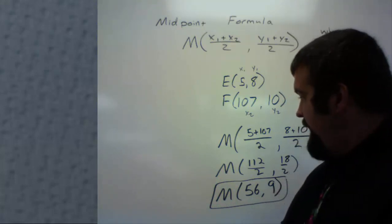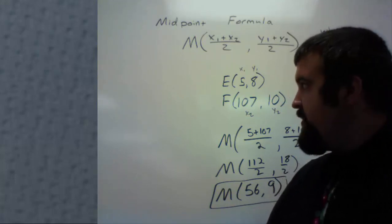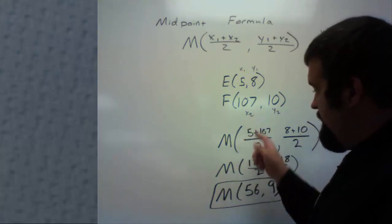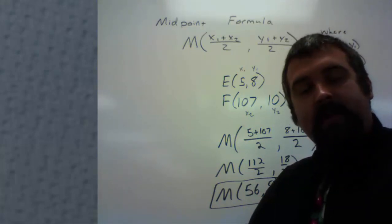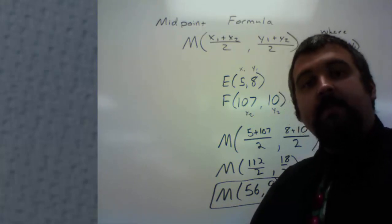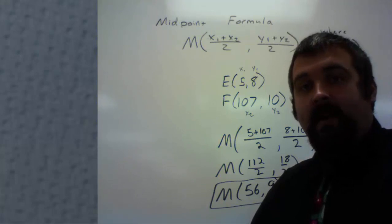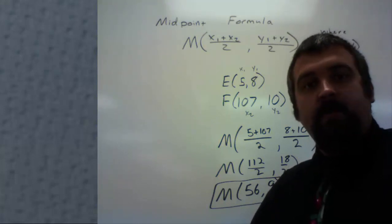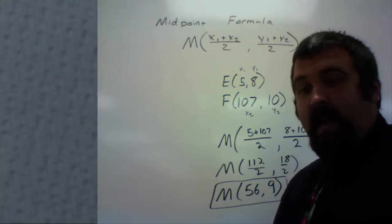If you took 56 minus 5, you get 51. And if you took 107 minus 56, you would get 51. It is halfway between, which means it's the same distance from both X coordinates. Same thing with the Y. If I were to take 9 minus 8, it's 1. And 10 minus 9, it's 1. It's both the same distance away from its endpoints. That's what a midpoint is. Halfway between.